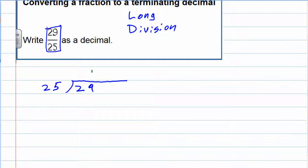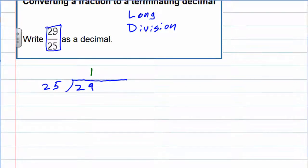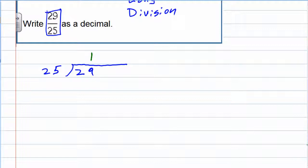25 goes into 29 once, and 1 times 25 gives us 25. We do our subtraction and we get 4. We don't want remainders though, because we're asked to convert this to a decimal. We want to keep dividing, and we can do that by adding zeros on to the end. We can add a decimal point and another zero to bring down and make that 40.